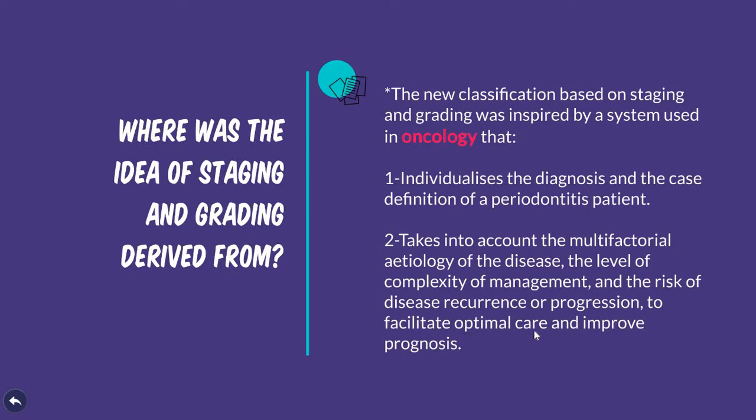To facilitate optimal care and improving prognosis, it's more convenient to tell a patient, for example, 'you are Stage 3 periodontitis,' and the patient immediately knows what should be done. They know the guidelines which should be undertaken for treatment of Stage 3 periodontitis, as well as for Stages 1, 2, and 4. This individualizes the diagnosis and reflects the multifactorial nature of periodontitis.